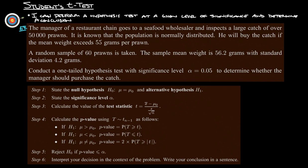Over 50,000 prawns. It's known that the population is normally distributed. He will buy the catch if the mean weight exceeds 55 grams per prawn. A random sample of 60 prawns is taken. The sample mean weight is 56.2 grams with standard deviation of 4.2 grams.